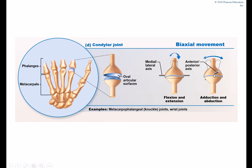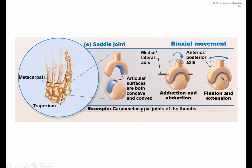Condylar joints are biaxial — they can move in a medial-lateral axis and an anterior-posterior axis. They have two oval articular surfaces between the bones, one slightly concave and the other slightly convex. Our wrist joints and knuckle joints are condylar joints. The other biaxial joint is the saddle joint — like putting a saddle on a horse. The saddle is the concave surface, the horse is the convex surface. They also move in medial-lateral and anterior-posterior axes. The carpometacarpal joint of the thumb is a great example of a saddle joint.